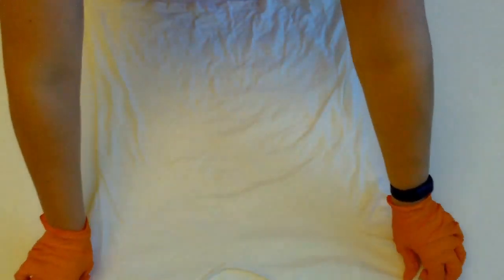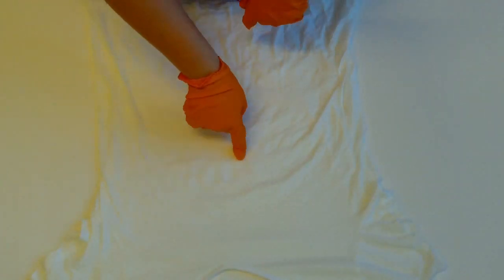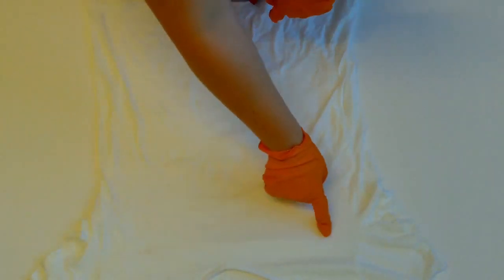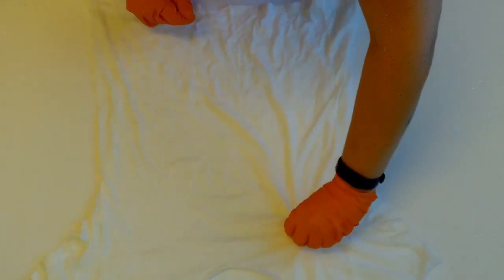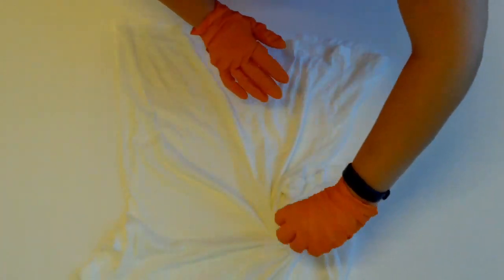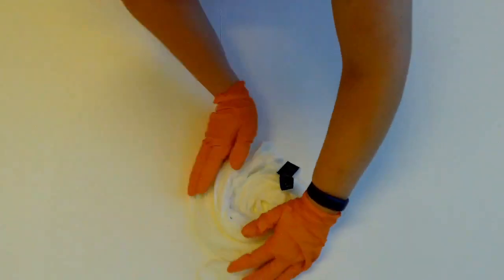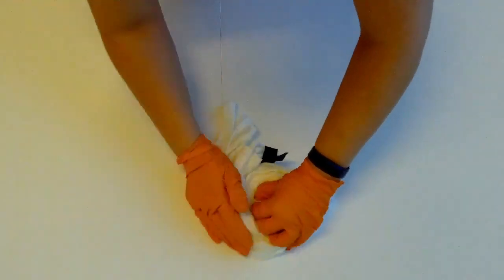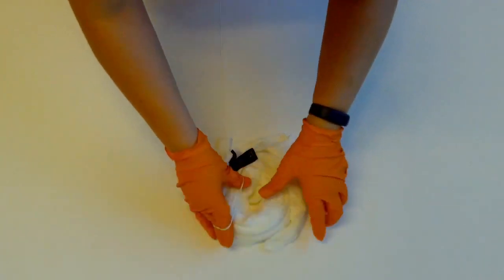For the spiral, lay the shirt out on a flat surface. Decide the center point of the spiral, in the center or off to a side. Pinch and begin to twist until the entire shirt is in a tight twist. Then, secure with rubber bands.